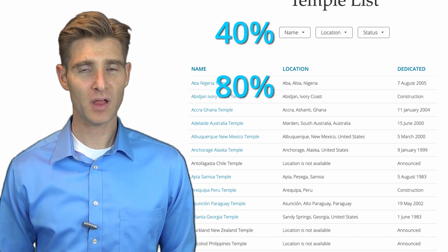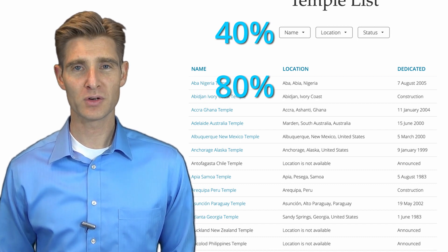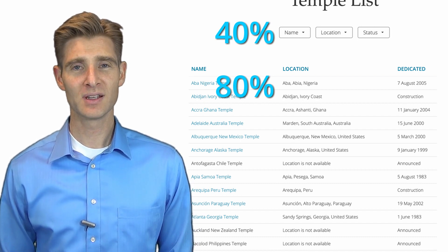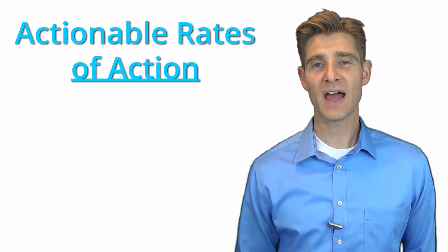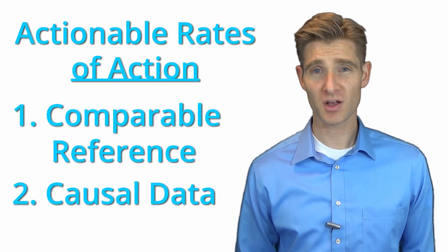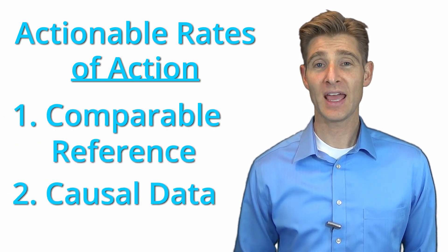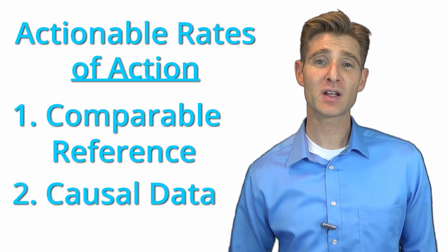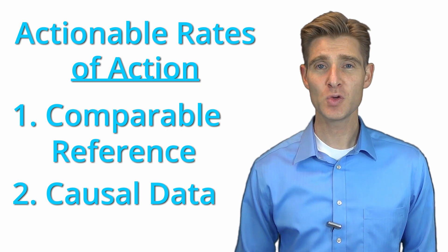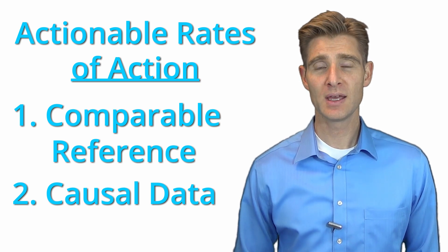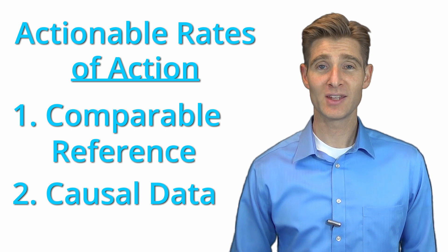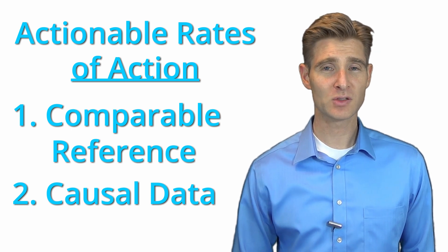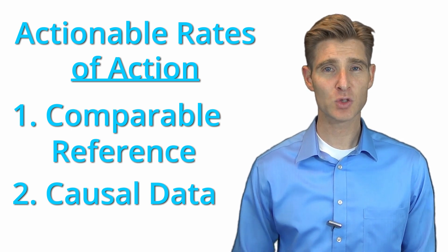A rate of action can never tell you a couple of important things. When using analytics data, a rate of action is usually never causal data, and it also doesn't have a comparable reference. These are the two things you need to get the most out of your data: a comparable reference and causal data. I want to talk to you about these two things and how they tie into a rate of action.